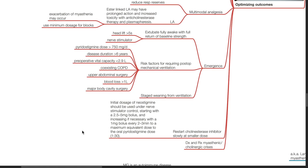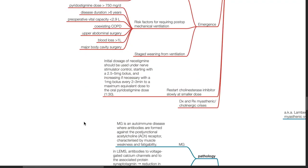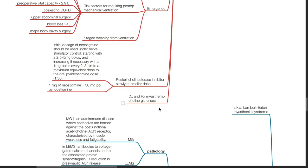Employ staged weaning from ventilation. Restart cholinesterase inhibitor slowly at smaller doses. Initial dosage of neostigmine should be used under nerve stimulator control starting with a 2.5 to 5 mg bolus and increasing if necessary with a 1 mg bolus every 2 to 3 minutes to a maximum equivalent dose to the oral pyridostigmine dose. Diagnose and treat myasthenic or cholinergic crisis early.